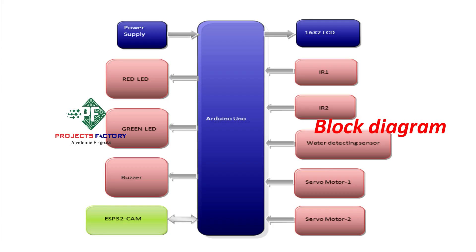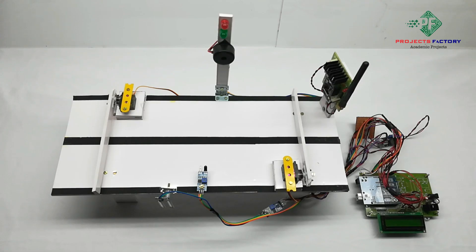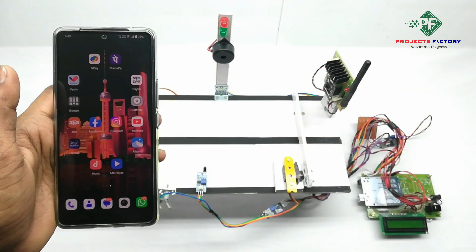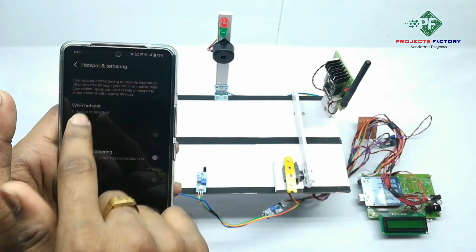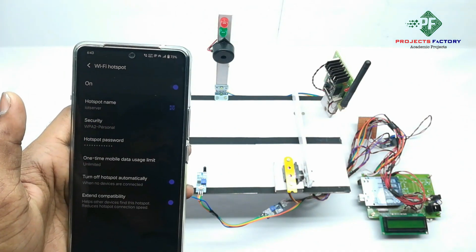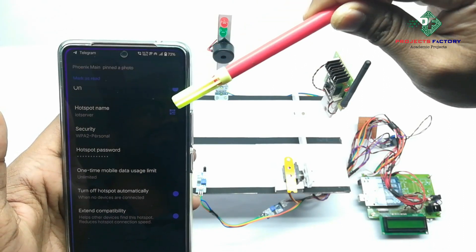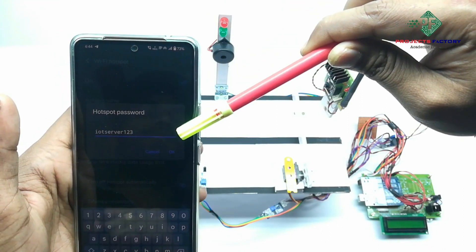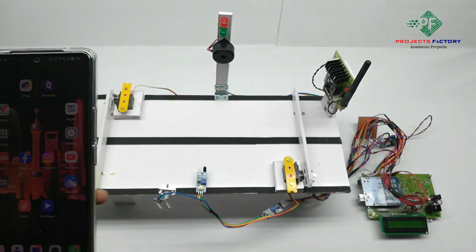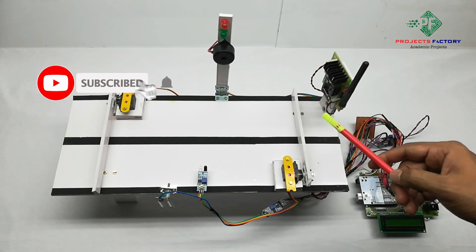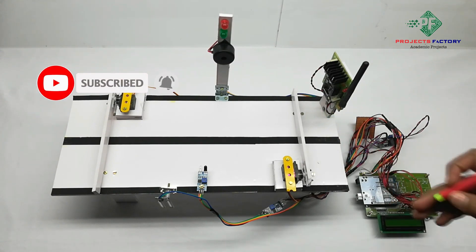Now we have to open hotspot settings. We can see here hotspot name iot server and password iot server one two three. Mobile should have internet through the SIM. Here ESP32 cam uses the WiFi to send to Gmail. Now coming to the working part.